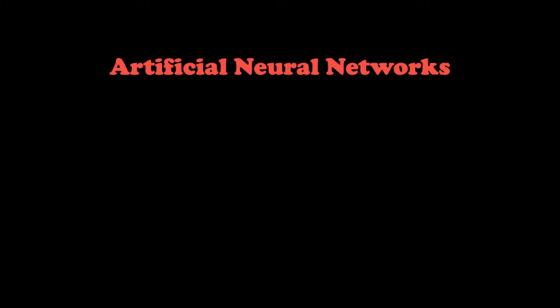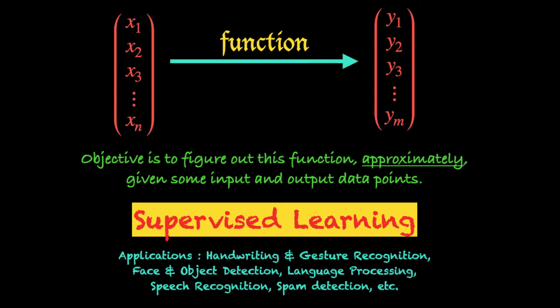In this video we are going to learn about artificial neural networks. Artificial neural networks, or ANNs, are the most popular way of implementing supervised learning, which is one of the paradigms of machine learning. There is another video on this channel on supervised learning which I suggest you go through if you haven't already, because to understand what ANNs are trying to do, it's important to understand supervised learning.